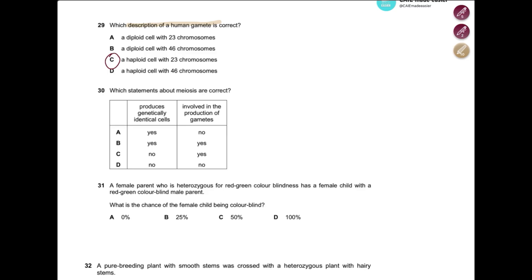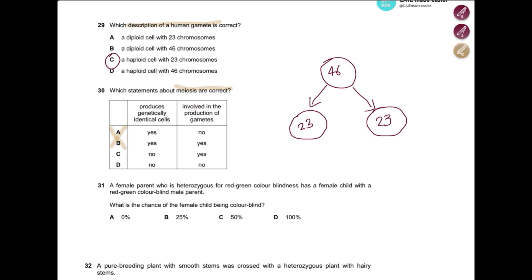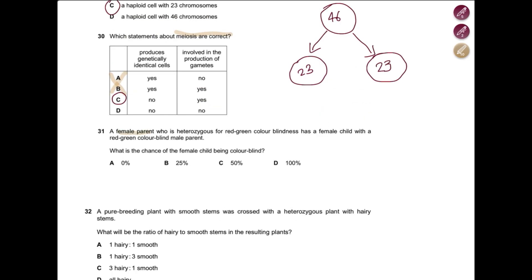Question: Which statement about meiosis is correct? Does meiosis produce genetically identical cells? No — meiosis is a reduction division producing genetically different cells. Is it involved in the production of gamete cells? Yes, that is correct. The answer is C.